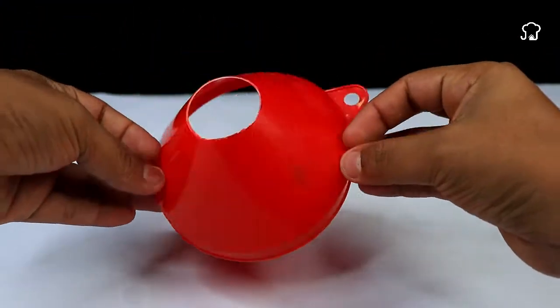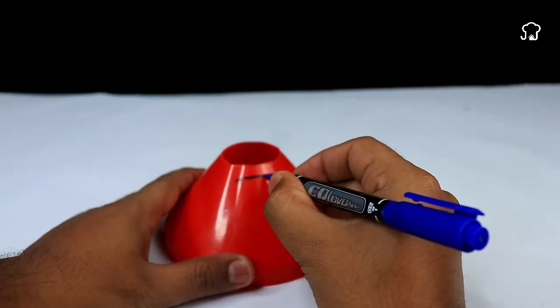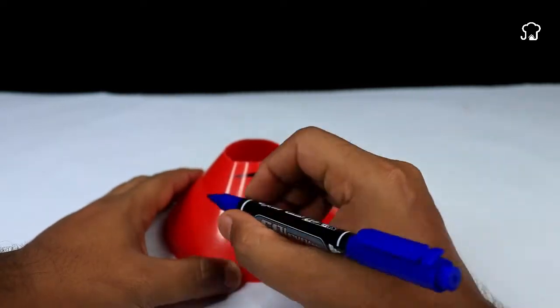Using the same marker, we will draw three plates on the funnel piece we previously cut. These plates will serve as a support for our speaker.